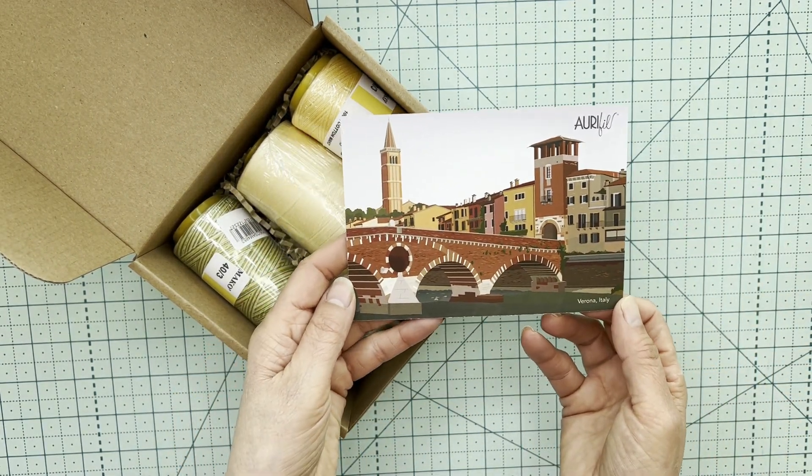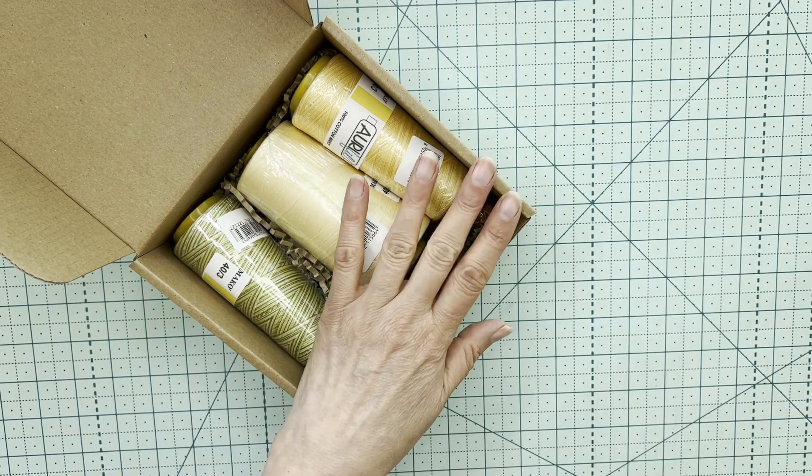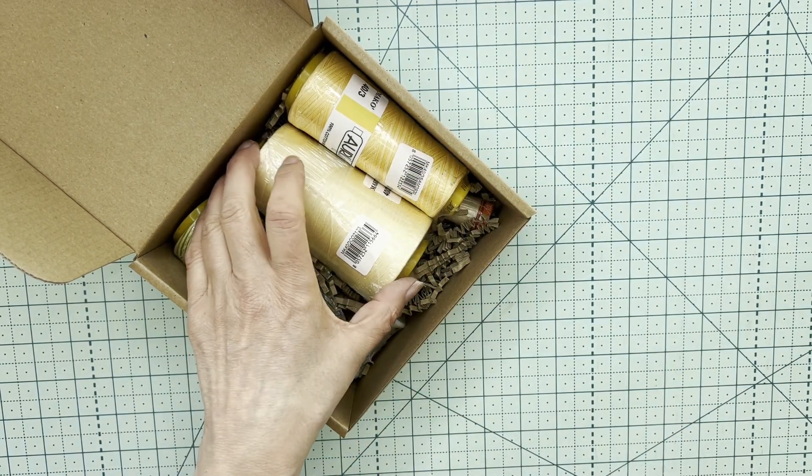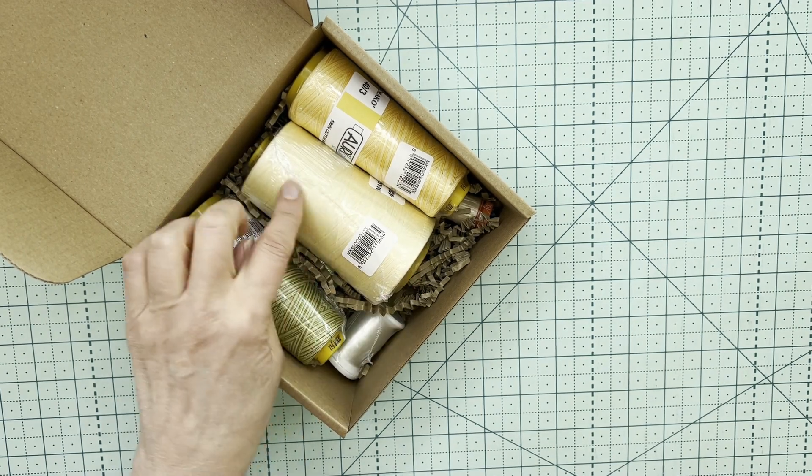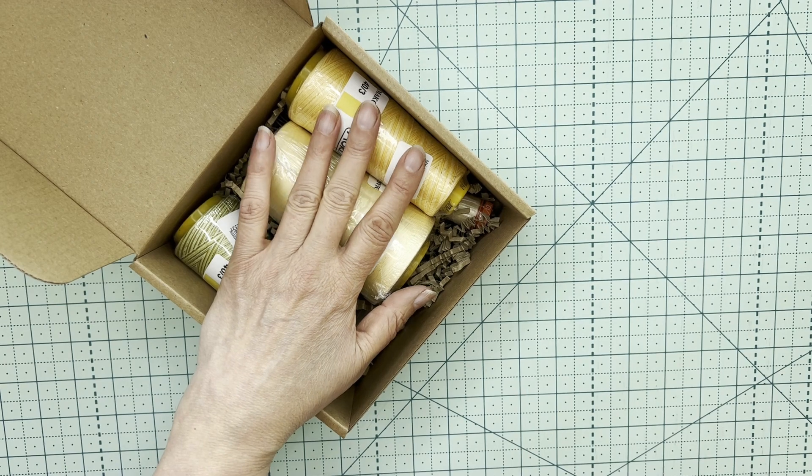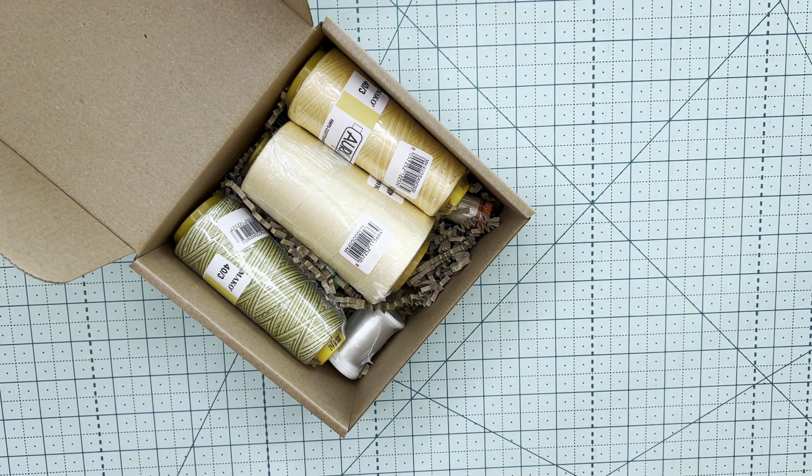This is a postcard from Verona, Italy. Let me have a squiz on the back. We are looking at 43. That's their long arm threads basically. So let's have a bit of a look at what's in here.